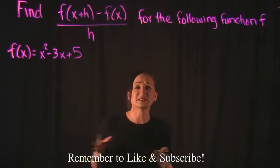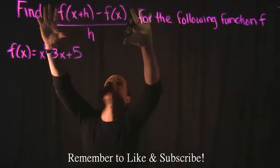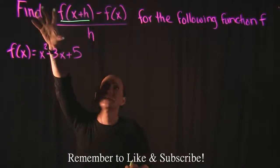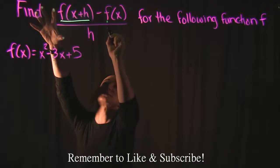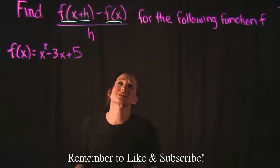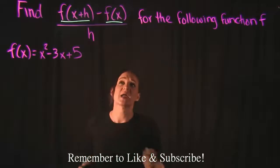So there's three different pieces to this problem. If you take a look, first we need to find f(x+h), and then we're going to just subtract away f(x) from it, which is just your function, and then we're going to divide it by h.